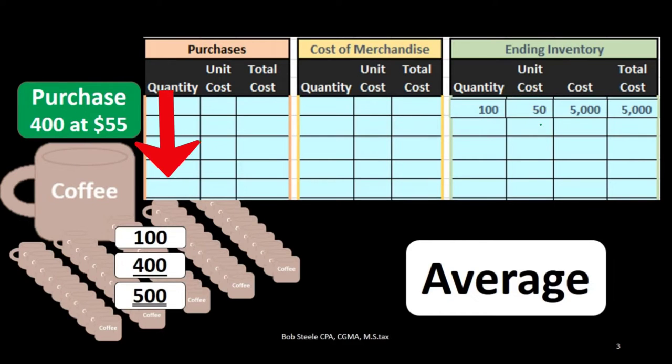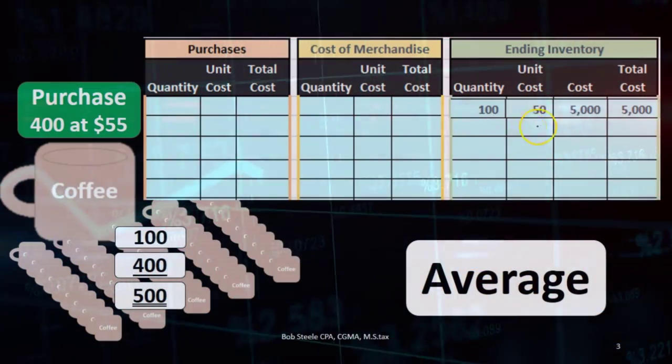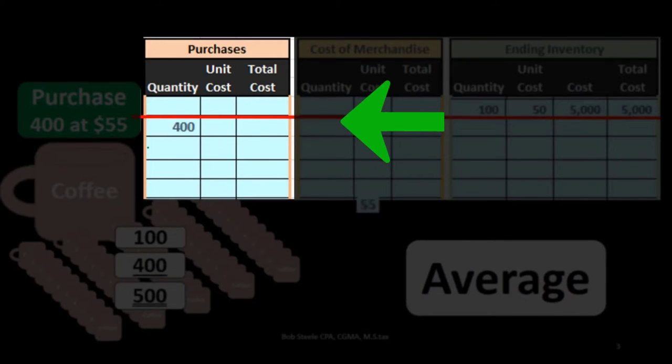However, if we purchase more units of the same exact coffee mugs, the price may change just due to factors like inflation and input cost. If we purchase 400 more units, for example, at $55, then now we're going to say we purchased 400 at 55, so we have two different costs for the same coffee mug that we then sell.